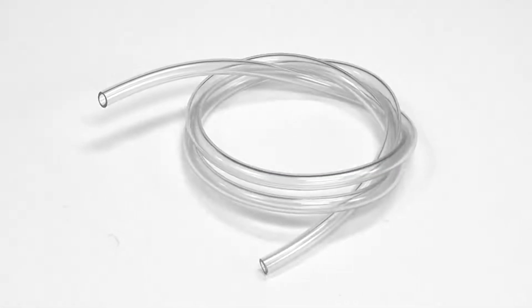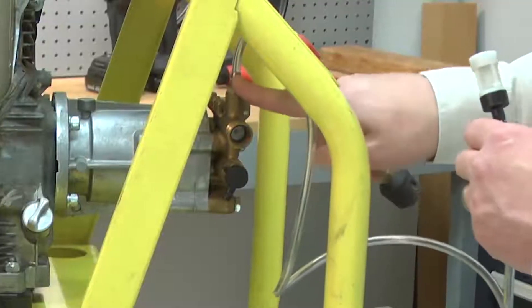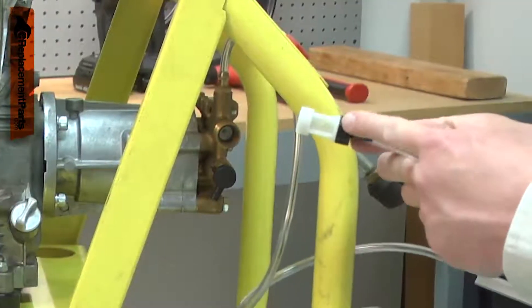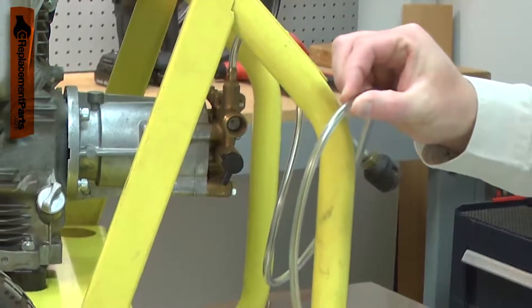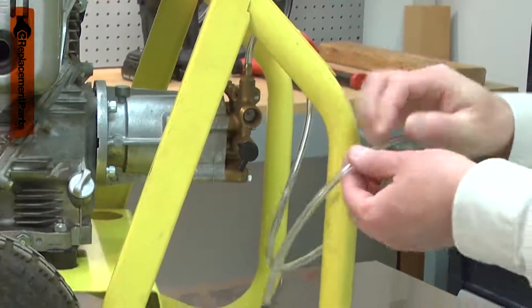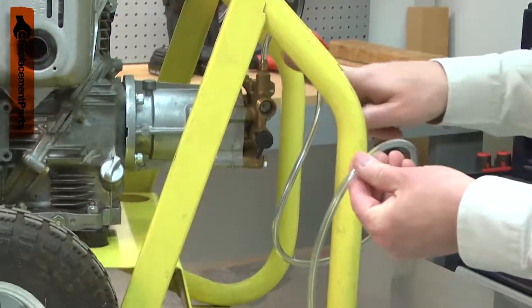The hose is part of your pressure washer's detergent system. It is attached to the detergent valve and has a filter attached to the opposite end. The filter is dropped into a bottle of soap or detergent and the hose delivers the fluid to the pressure washer so soap can be applied.